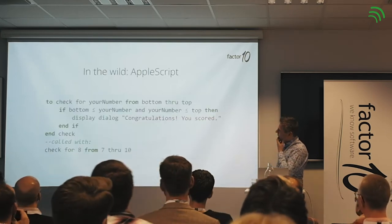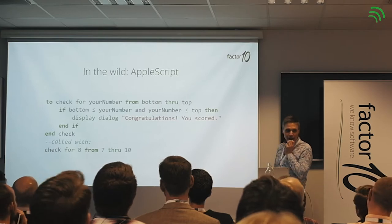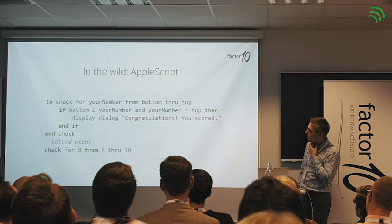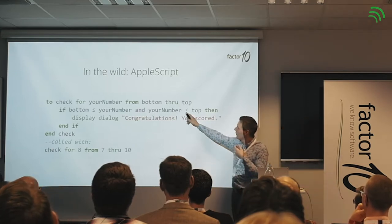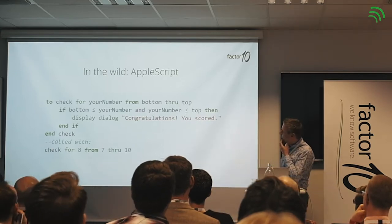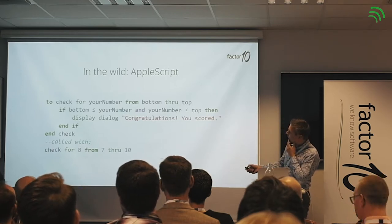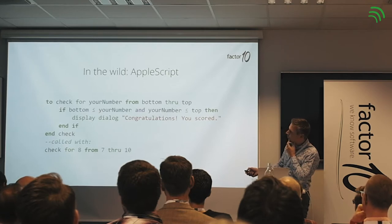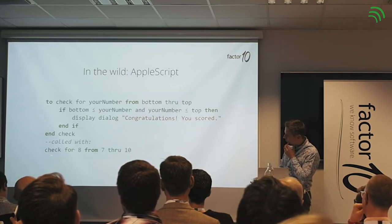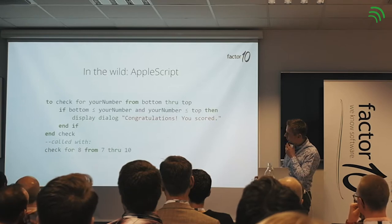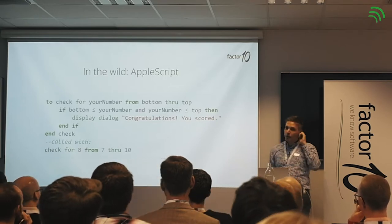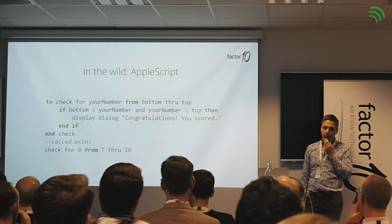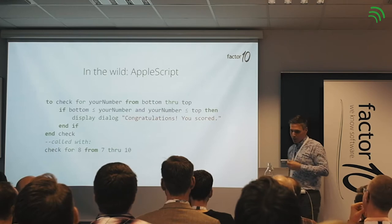Do you use AppleScript a lot? No. But if you did, you would write code like this to check a number 'from bottom through top' — 'if bottom'. This is cute. And then you would call it with an event handler: normally it uses 'on', but you can also use 'to'. You call it by saying 'check for 8 from 7 through 10'. I wouldn't remember how to write code like this — but then again, I'm not a Mac user, so perhaps that's why.